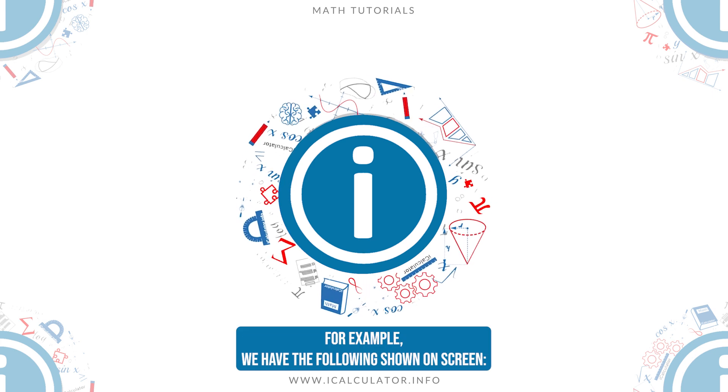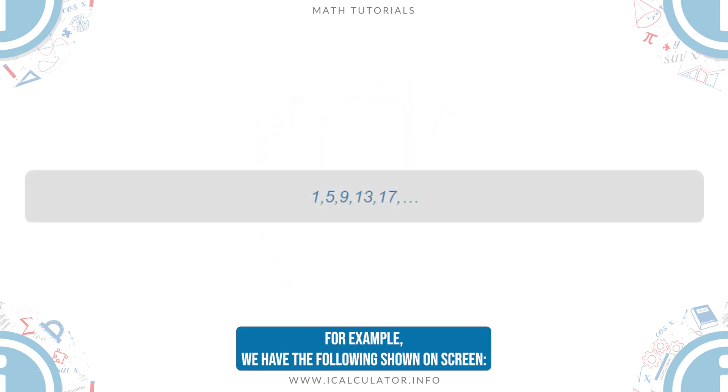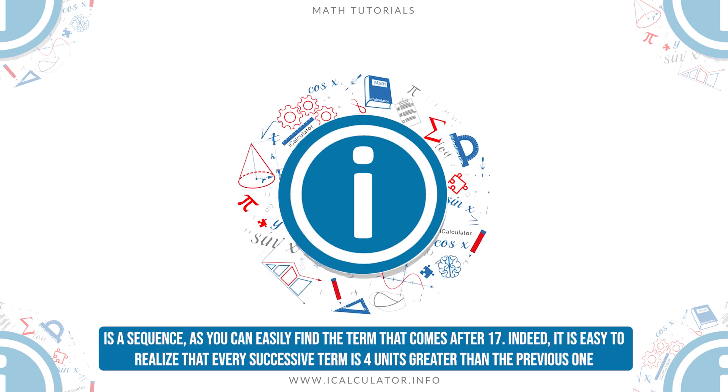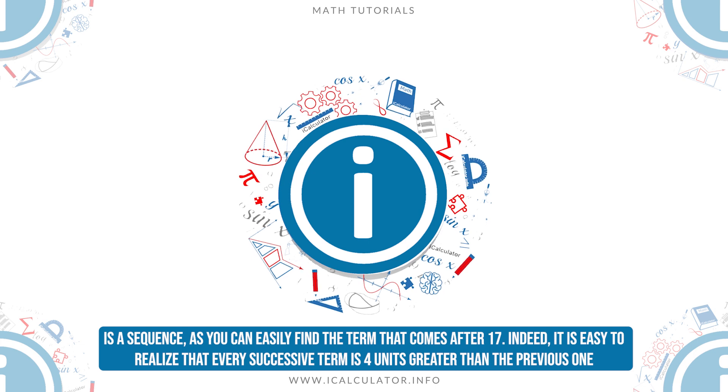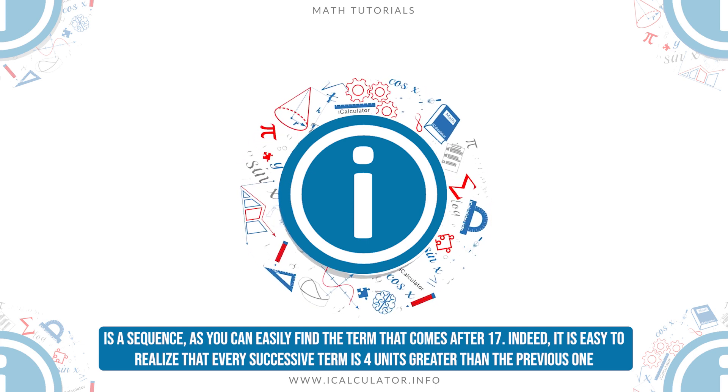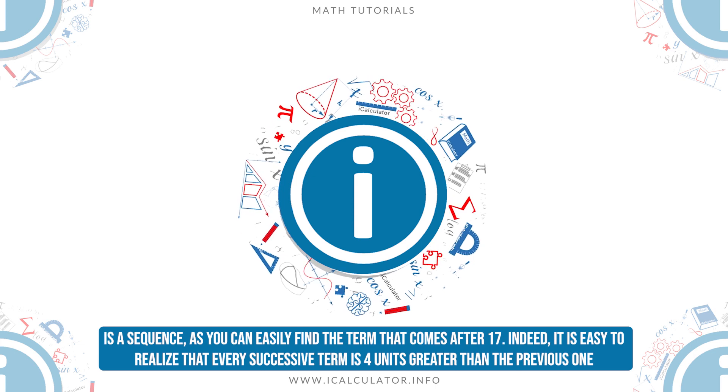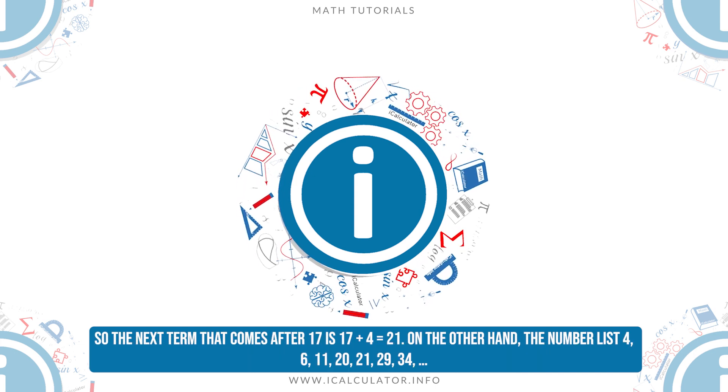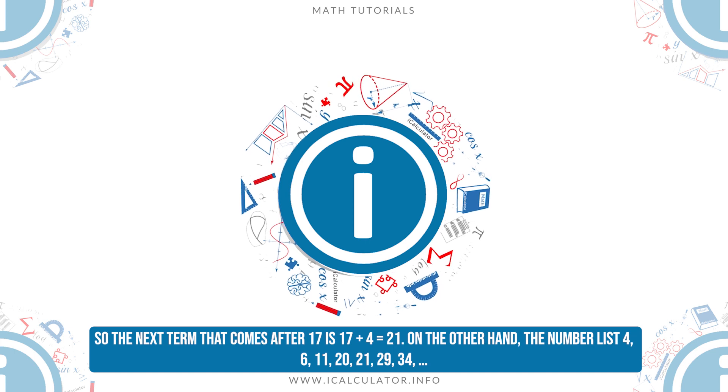For example, we have the following shown on screen. This is a sequence, as you can easily find the term that comes after 17. Indeed, it is easy to realize that every successive term is 4 units greater than the previous one, so the next term that comes after 17 is 17 plus 4, which equals 21.